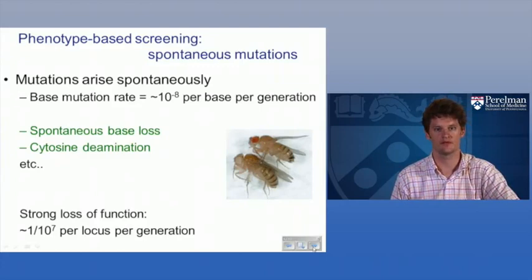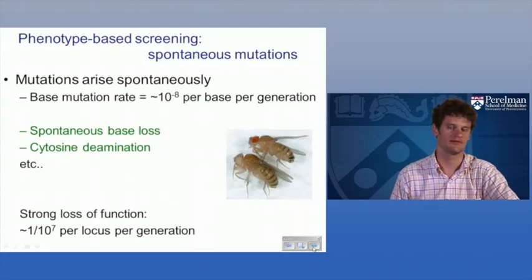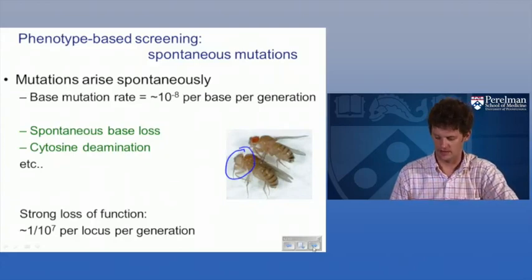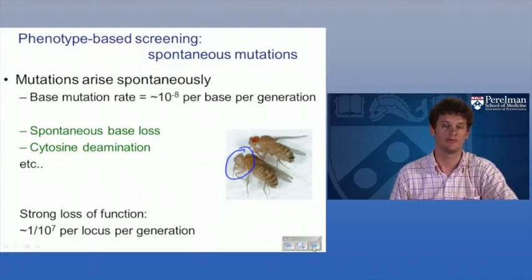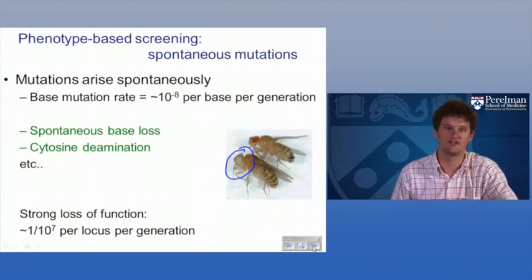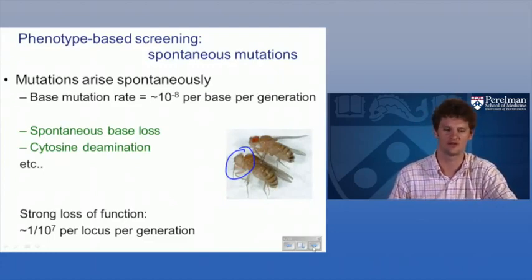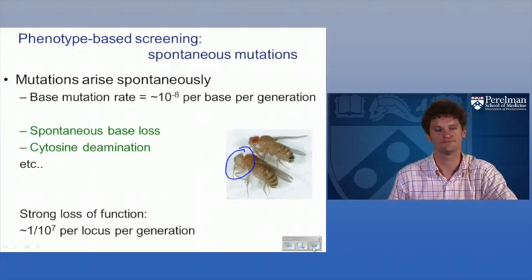In flies, the identification of white-eyed flies by Morgan over 100 years ago was a spontaneous mutation. In yeast, since you can grow 10 to the 9th organisms, even with a mutation rate of 10 to the minus 8, you've got all mutations in your population. You can just plate those out, and if you have some selection — for example, yeast that grow on a particular drug — you'll get colonies corresponding to your mutations without any mutagenesis whatsoever.